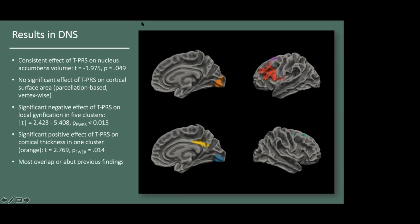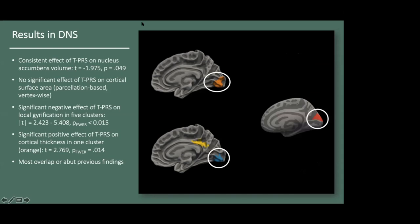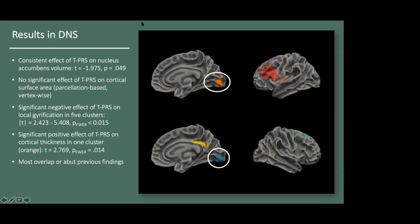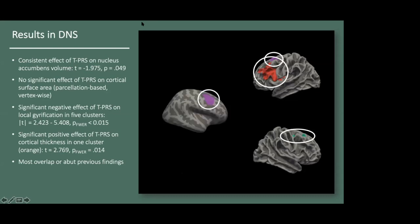In almost all cases, these regions partially overlapped or abutted regions detected in the previous analysis. For example, higher TPRS was associated with greater thickness and less gyrification in right occipital regions in the current analysis, and with lower cuneus surface area in the previous analysis. Likewise, higher TPRS was associated with less gyrification in bilateral frontal regions in the current analysis, and with lower caudal middle frontal surface area in the previous analysis.